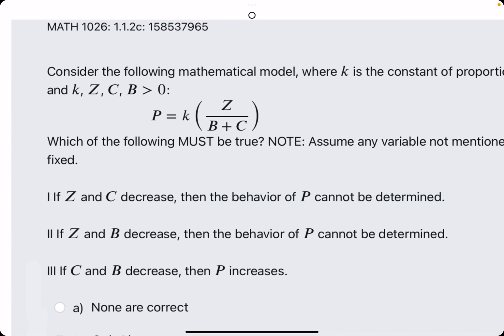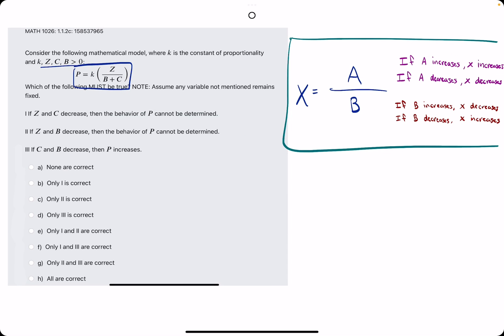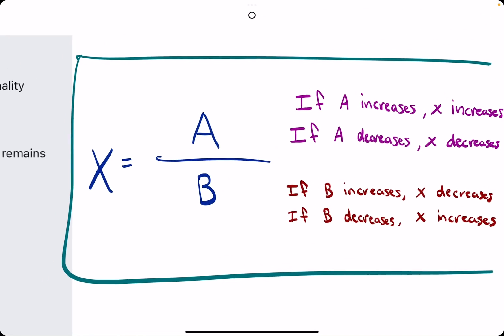Okie dokie. In this problem, we are given a model equation, and they tell us that these variables are all strictly greater than zero. The goal is to identify which of these statements are true. Before we jump into this, let's check out a little idea that they're assessing here.